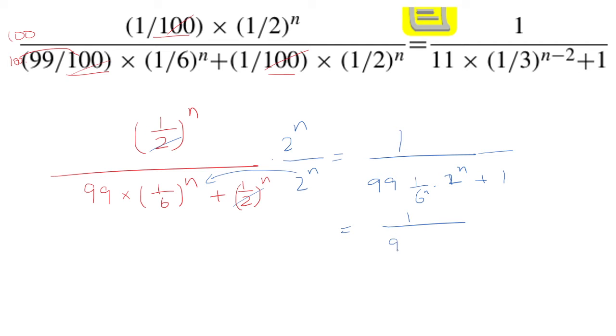So that's the same thing as 1 over 99. Factor out the n's. We have (2/6)^n plus 1, and that is 1 over 99 × (1/3)^n plus 1.